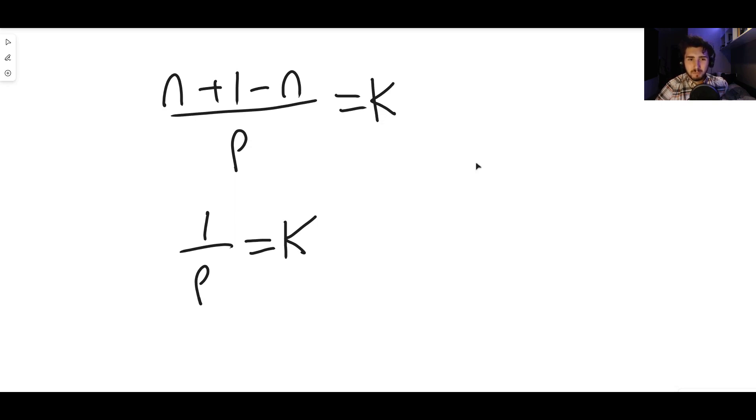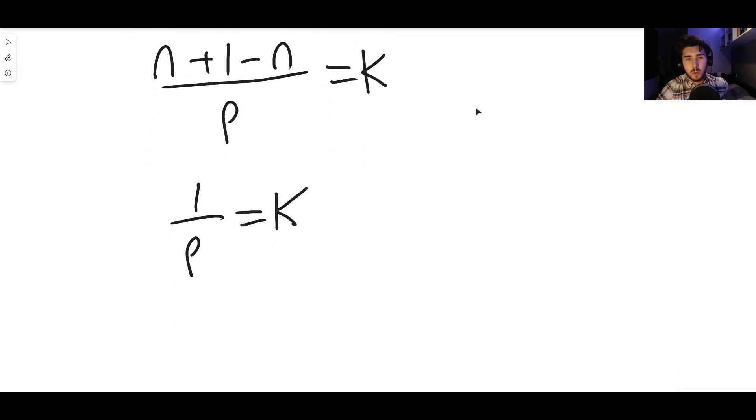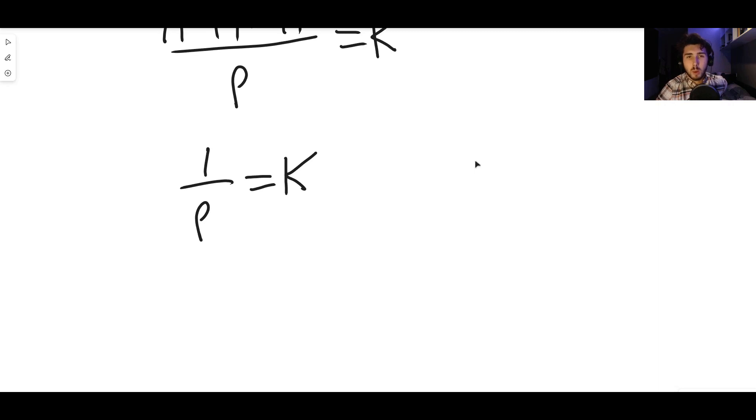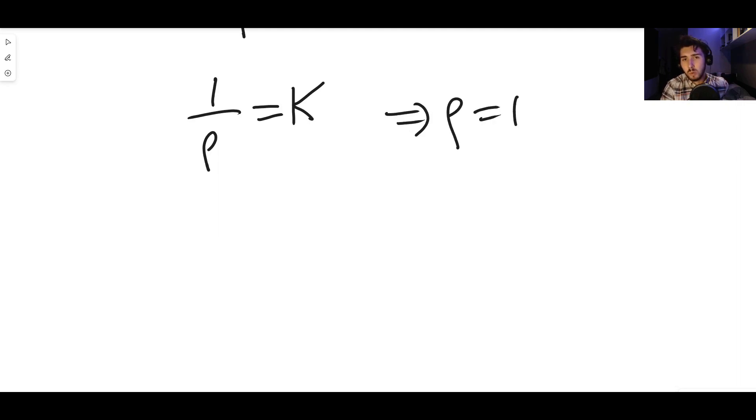Because the only number that divides one, where you can do one divided by that number to still get a whole number, is the number one and technically minus one as well. But if p was minus one, then that's not the greatest common divisor because it's a negative number. So the only positive number here that we're talking about is the number one. You see that because p can't be two because that would give you a fraction, p can't be three because that would give you a fraction. It can't be any number other than the number one. So this statement here implies that p must be equal to the number one.